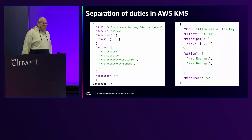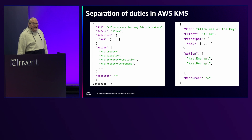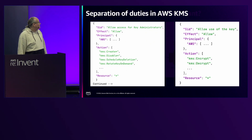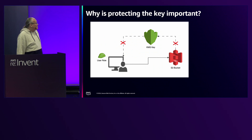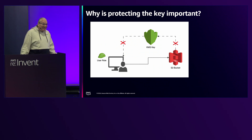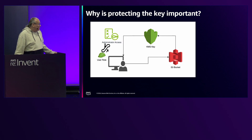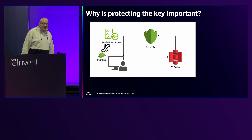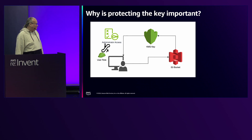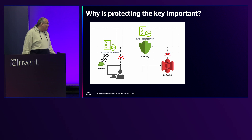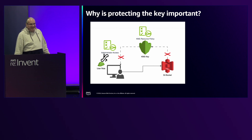This is what the policy looks like — on the left you have the administrator and on the right you have the user. Why is protecting the key important? Without the key, you can't get any data from S3. However, if a user is able to escalate their privileges, they gain KMS access and can get files from S3. But with the KMS resource policy, even as full admin you can't access data in S3 because you're blocked by the resource policy.